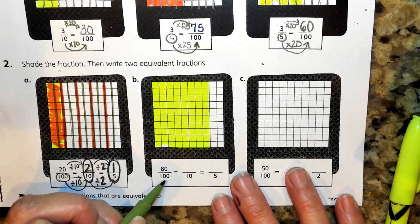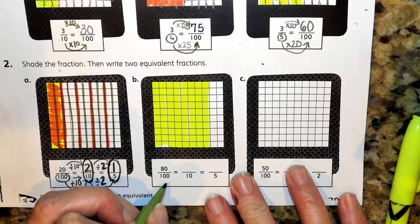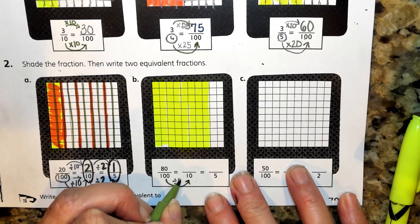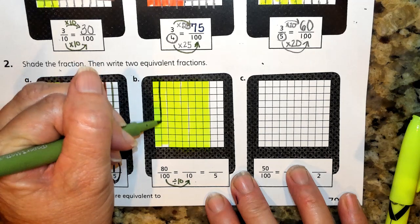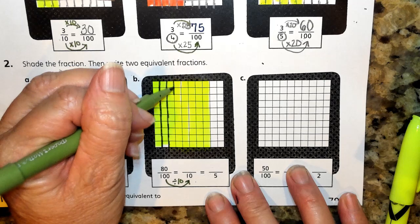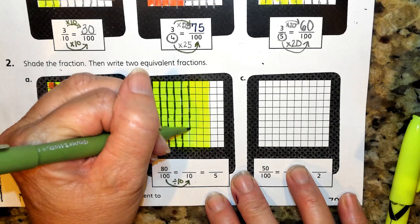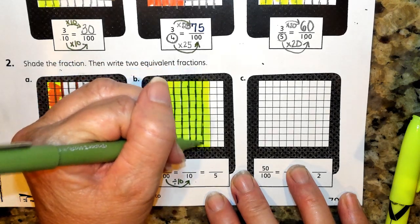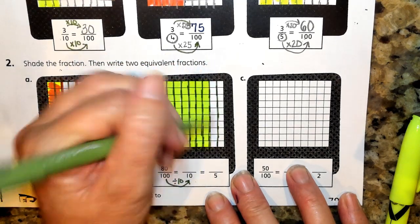And if I think about getting smaller from the number 100 to the number 10, I'm going to be dividing that by 10. So now I'm going to be taking this and just cutting it into 10 equal pieces. So there's 1, 2, 3, 4, 5, 6, 7, 8, 9, and 10.